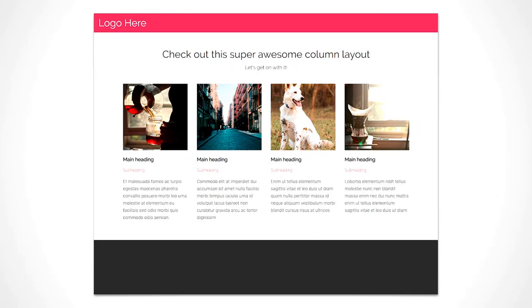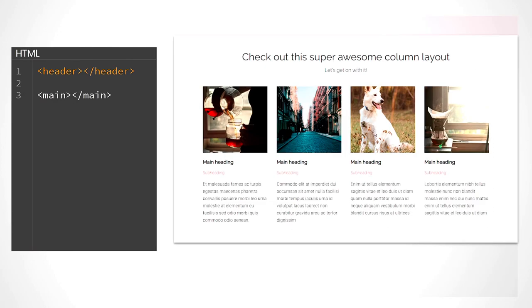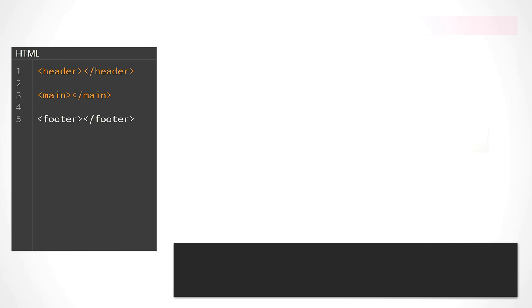Now that you understand how websites are structured, let's break down our project. That red bit at the top is obviously a header, so we'll use the header tag. All the content underneath I'm going to group inside a main — if this were a scrolling site with more sections I might use the section tag, but main will do. The chunk at the bottom is obviously a footer, so we'll use the footer tag.